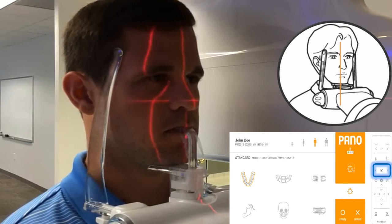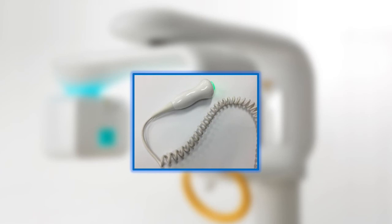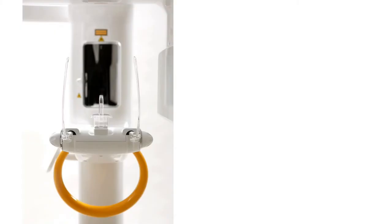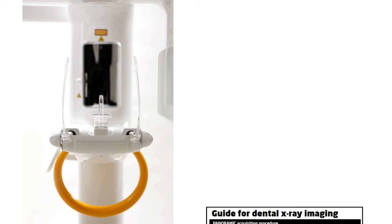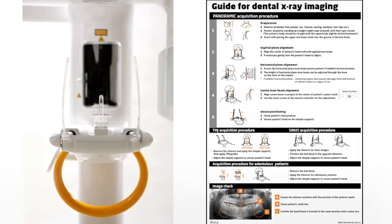Ask the patient to press their lips together and press their tongue against the roof of the mouth. Closing their eyes will help them remain still. Move at least 7 feet away from the unit and protect yourself from radiation. Press and hold down the exposure button for the duration of the exposure. For edentulous or partially edentulous patients, be sure to use the appropriate positioning device. For more information on proper positioning and usage of Rayscan Alpha Plus, please consult the positioning guide.